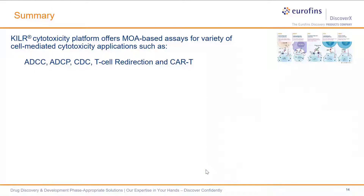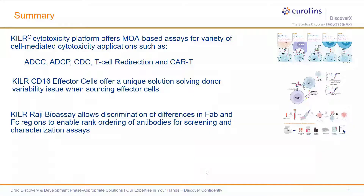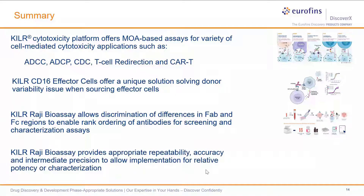To summarize: the KILR cytotoxicity platform offers MOA-based assays for a variety of cell-mediated cytotoxicity applications. Our killer CD16 effector cells offer a unique solution to solve donor-to-donor variability issues when sourcing effector cells. The killer RAJI bioassay allows discrimination of differences in FAB and FC regions to enable rank ordering of antibodies. And the killer RAJI bioassay provides appropriate repeatability, accuracy, and intermediate precision to allow implementation for relative potency or characterization.